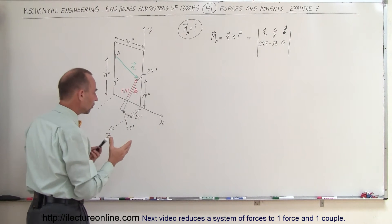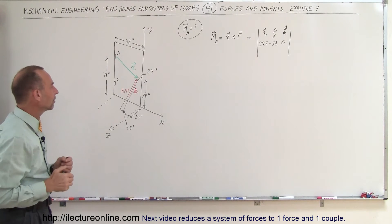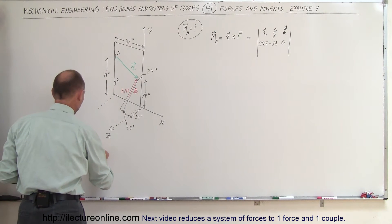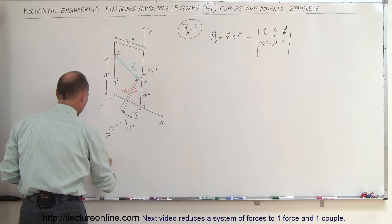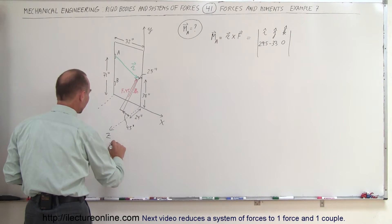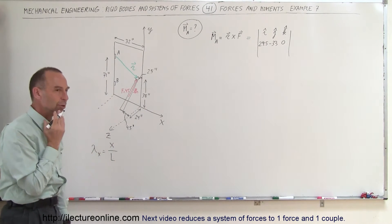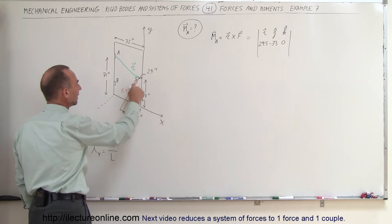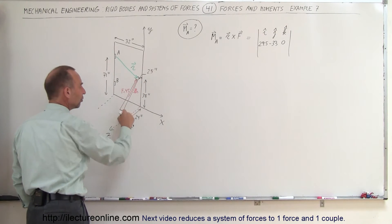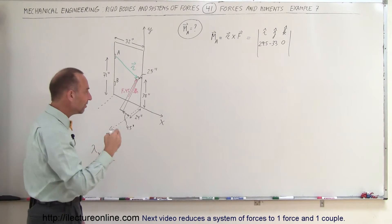The direction cosines are proportional to the X, Y, and Z components relative to the overall length of that vector. We'll take the length of the piece of wood, call it L, and then find the X, Y, and Z components of that length. Multiplying that ratio by the 45-pound force gives us the X, Y, and Z components of the force.